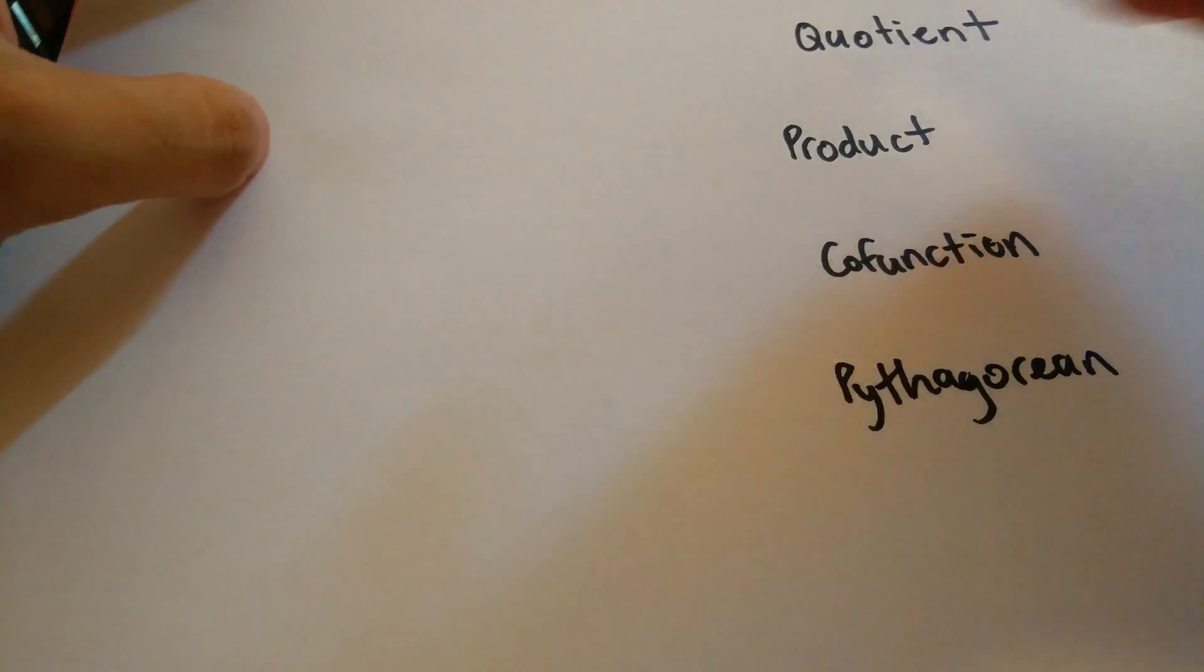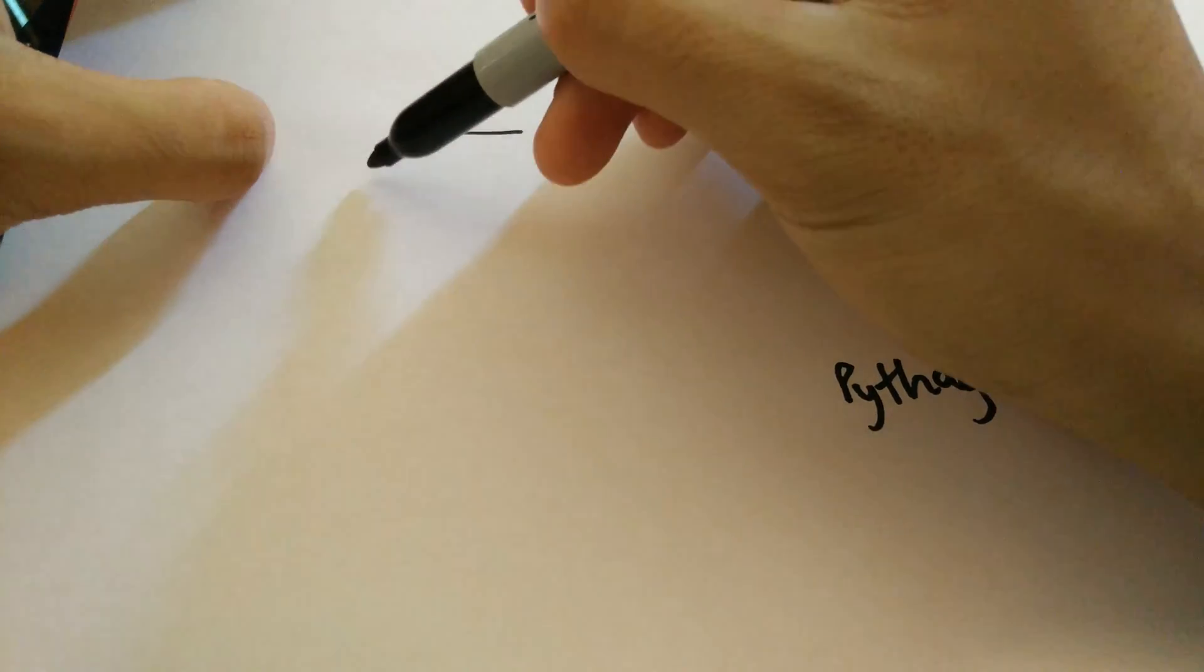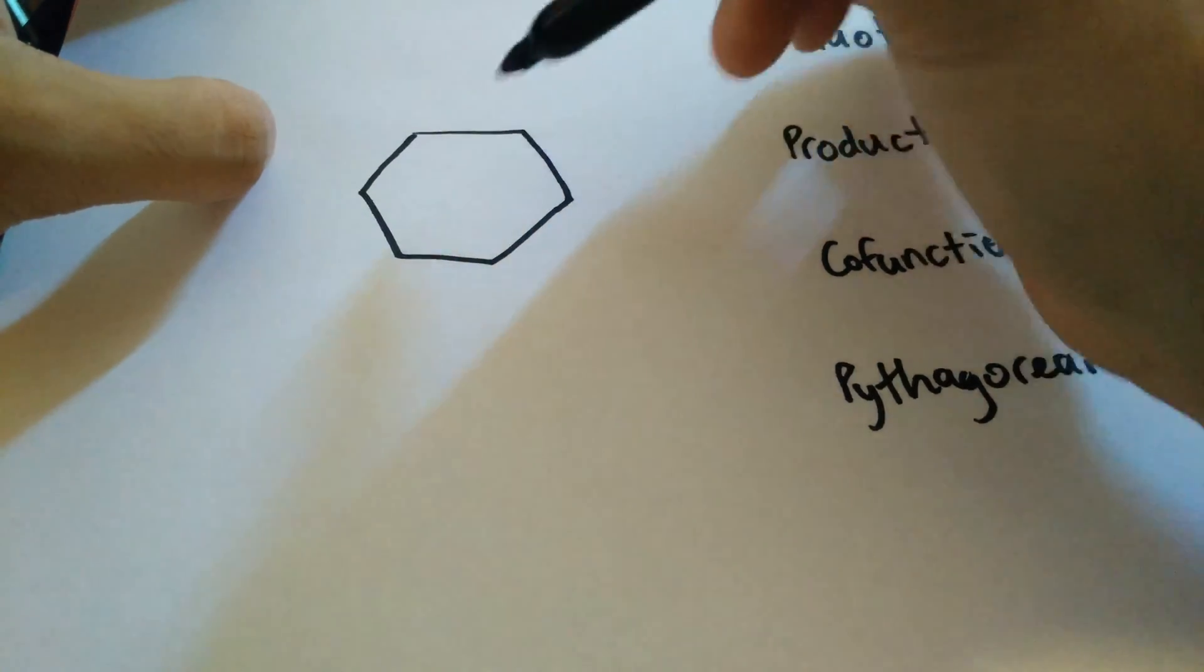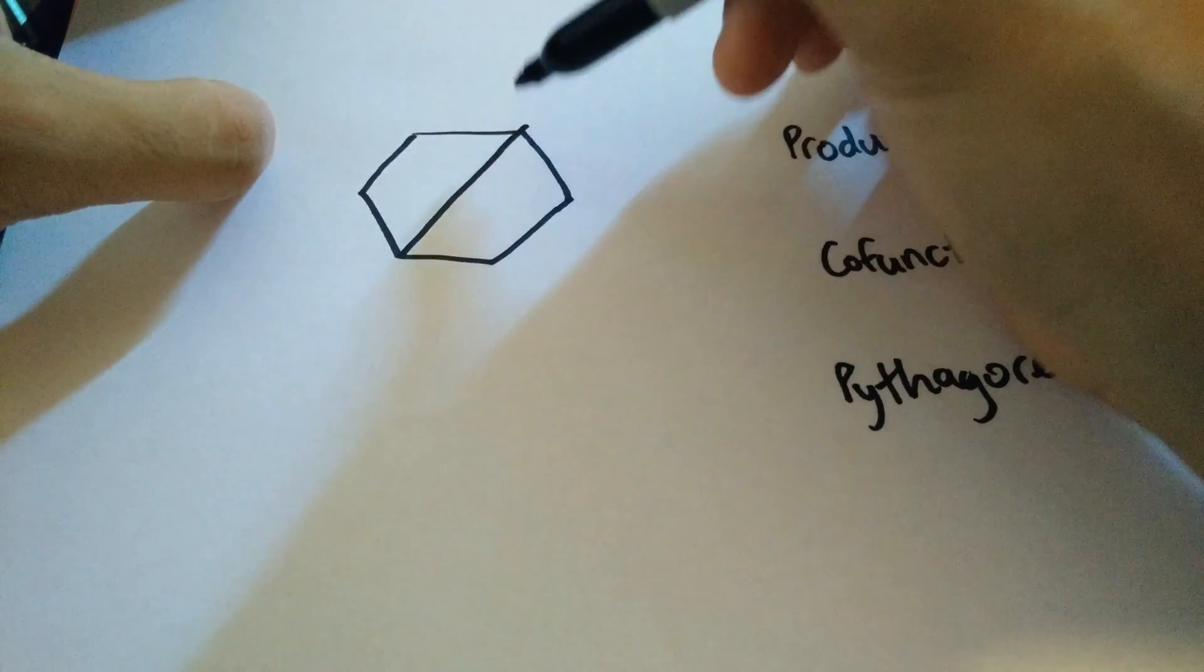First, you have to draw the actual hexagon. It's just a regular hexagon with lines connecting opposite ends.